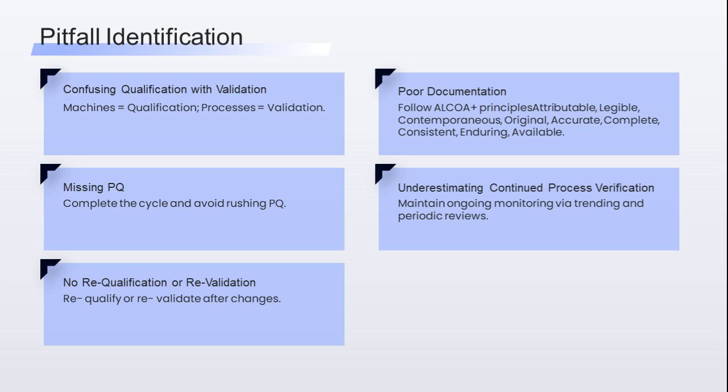Poor documentation: stick to ALCOA Plus — attributable, legible, contemporaneous, original, accurate, plus complete, consistent, enduring, and available. Skipping continued process verification: validation doesn't end after three batches. Keep monitoring with trends and periodic reviews to stay in control.